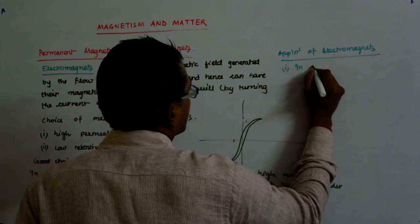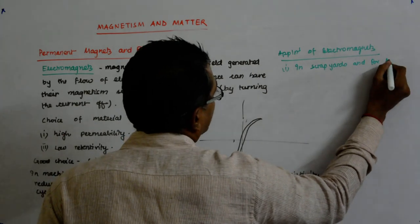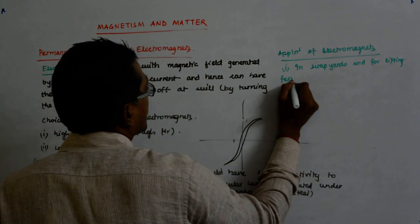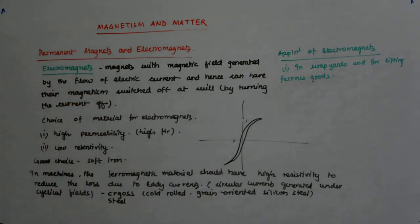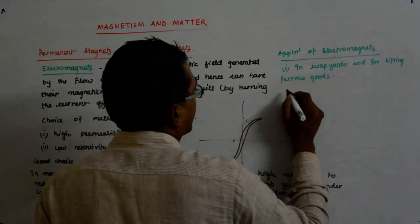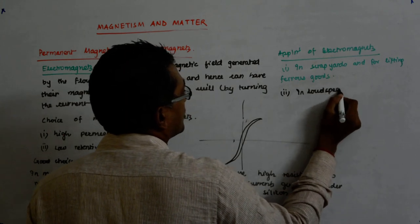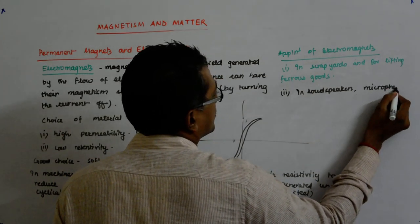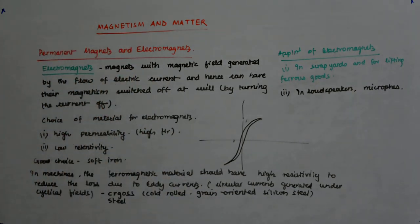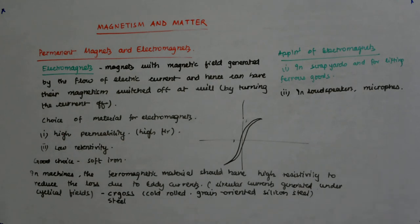And what are the applications of electromagnets? Applications of electromagnets is number one in scrap yards for lifting ferrous goods. Not necessarily, see even putting slings has to be done by a person. If you want to avoid that you directly use it. Second is in loudspeakers and microphones. That ends this chapter.